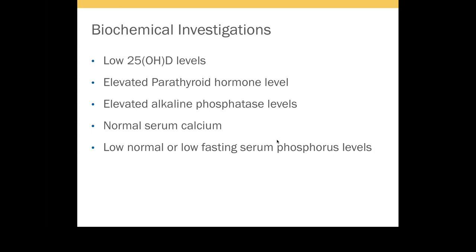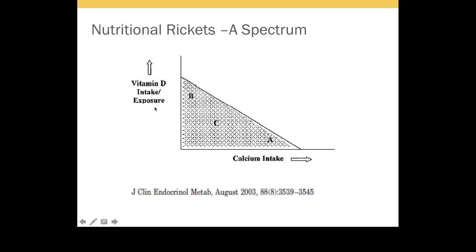For biochemical investigations, 25-hydroxyvitamin D is the main marker to diagnose vitamin D deficiency rickets. Additionally, we will see a high parathyroid hormone level and elevated alkaline phosphatase, often in the presence of normal serum calcium — because when PTH rises, bone is resorbed to keep calcium in the normal range. Most patients with nutritional rickets have normal serum calcium unless they are in the rapid growth phase of early infancy. They can have low-normal to low fasting phosphorus levels, but not as low as in vitamin D dependent rickets.